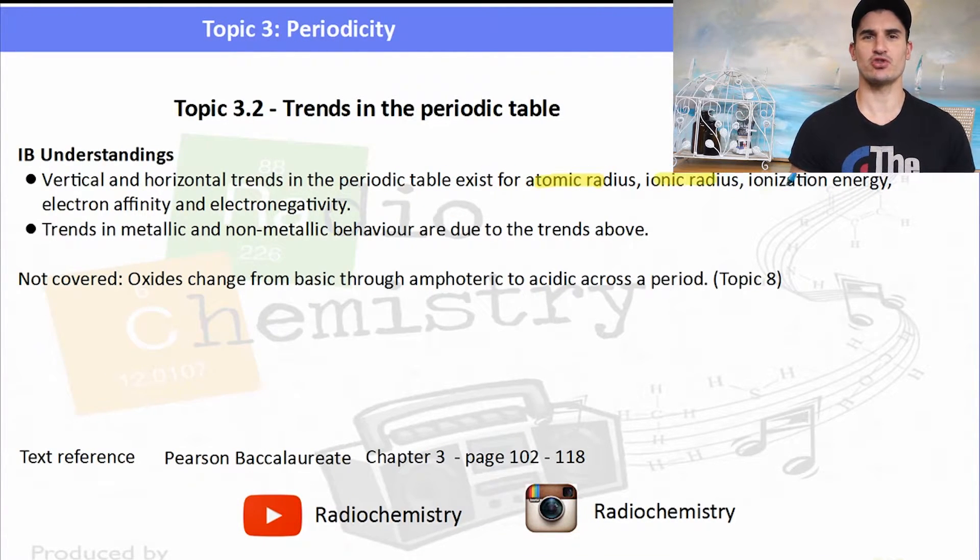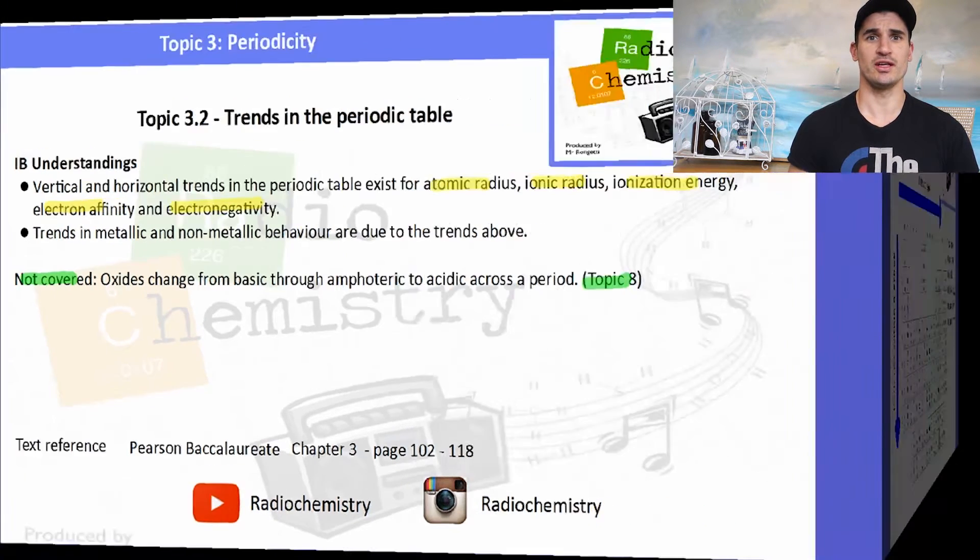For topic 3.2, the key understandings are basically the trends in atomic radius, ionic radius, ionization energy, electron affinity and electronegativity. What we're not going to cover in this is how the oxide change as we move across period 3. We're going to do that in topic 8, so check that link out if you need that section.